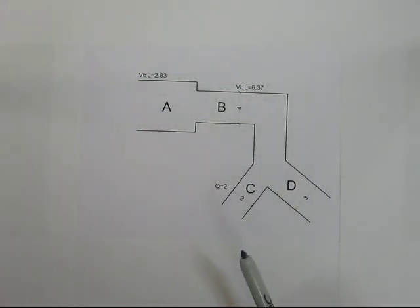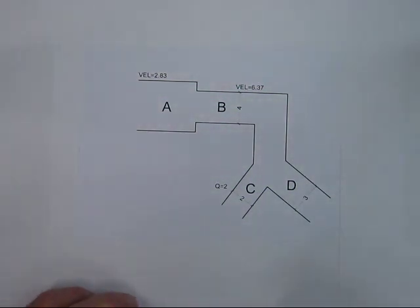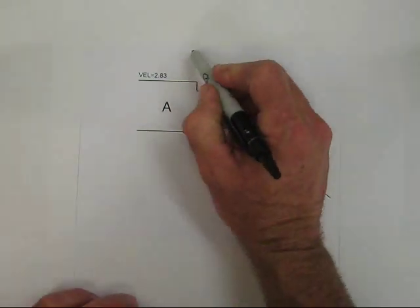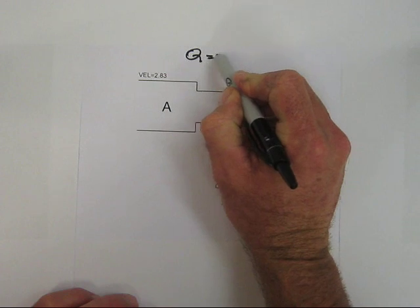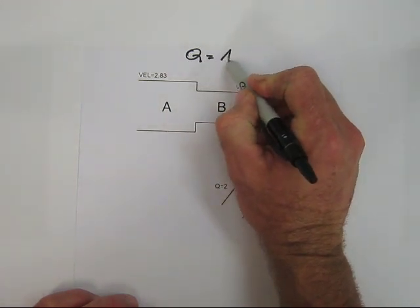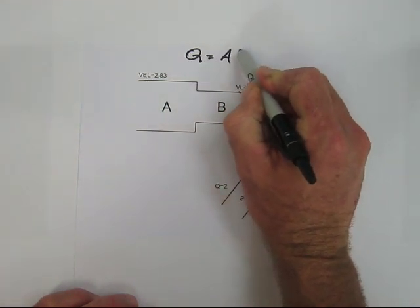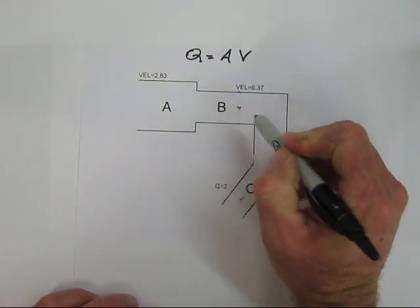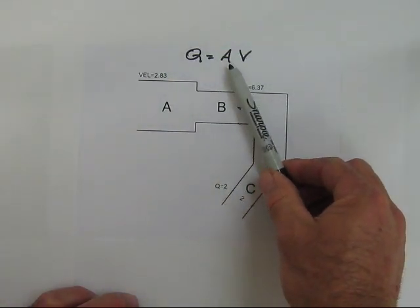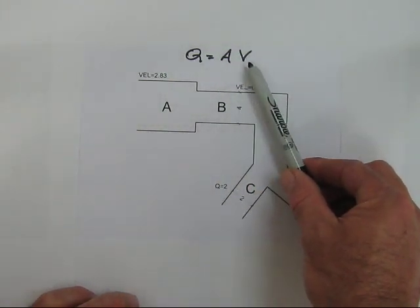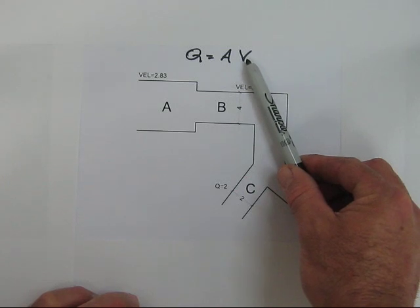The flow rate is calculated using the formula Q equals A times V, where Q is the flow rate, A is the cross-sectional area of the pipe, and V is the velocity of the fluid in the pipe.